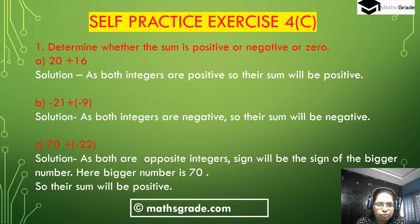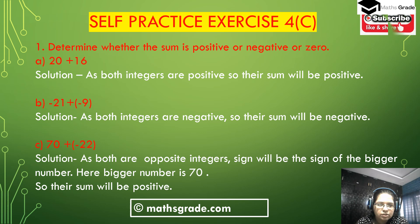Now we solve question number 1. Question number 1 is: determine whether the sum is positive, negative, or zero. First bit (a) is 20 plus 16. Both are positive integers, so their sum will be positive. (b) Minus 21 plus minus 9. Both are negative integers, so their sum will be negative.